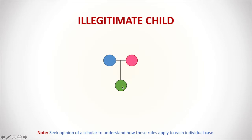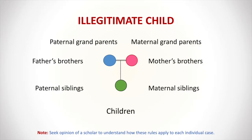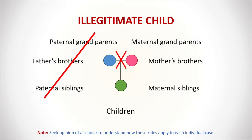For an illegitimate child, all paternal relationships are cancelled for the purpose of inheritance — paternal grandparents, siblings, uncles, aunts, and cousins. Only the mother and maternal relationships are taken into account. The relationships of the child's own children and subsequent generations are unaffected. It is important to seek opinion of local scholars to understand how to apply these rules in your specific scenario.